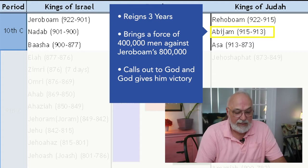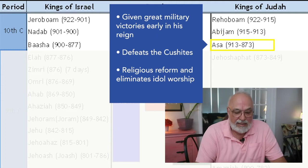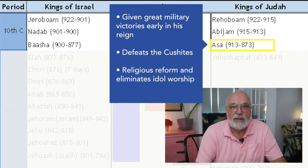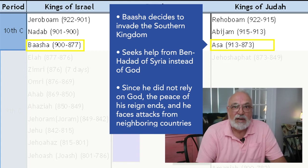Moving to the southern kingdom, Abijan dies and his son Asa rules. Asa is given great military victories and defeats the Cushites who come against him. He also brings religious reform to Judah and eliminates idol worship. Basha decides to invade the southern kingdom and sets up fortifications at Ramah, which is only two hours away from Jerusalem, the capital of the southern kingdom.